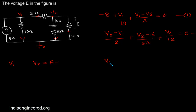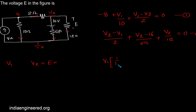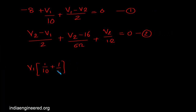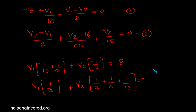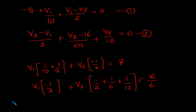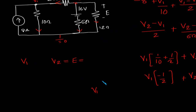Rearranging the first equation, these are the two equations, and we can solve this using a calculator. V1 is equal to 110 by 3, and V2 is equal to 28 volts.